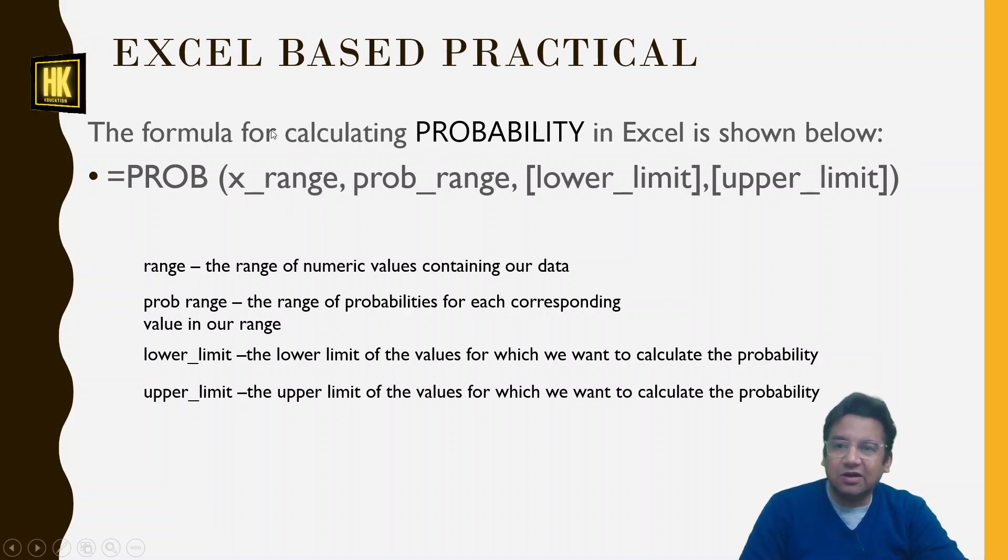X-range is a range of values of X for which you want to calculate the probability and the probability range is the respective probabilities of X. Then comma, you will write the lower limit comma upper limit and you will close the bracket. Lower limit and upper limit are the values from the X-range.